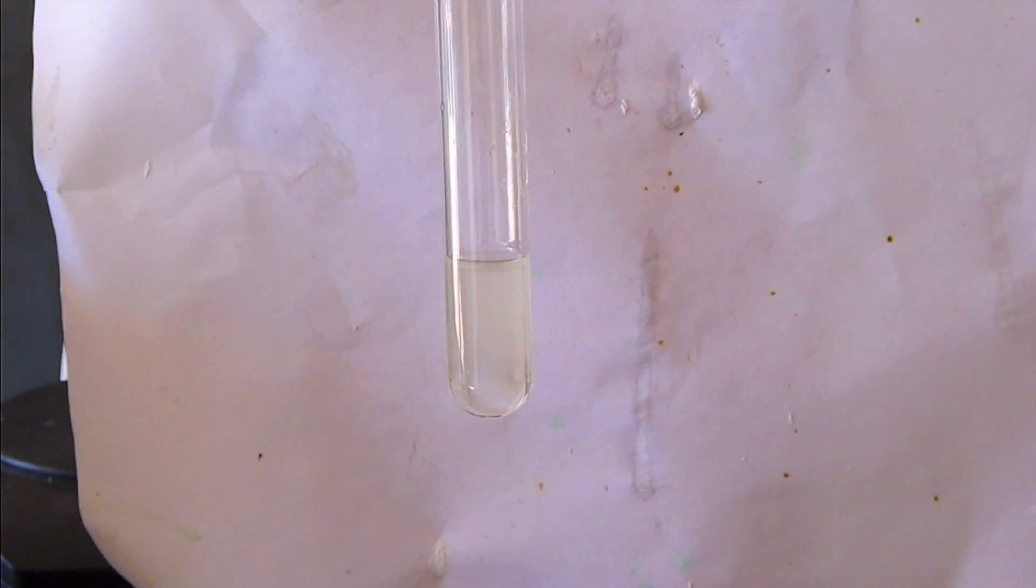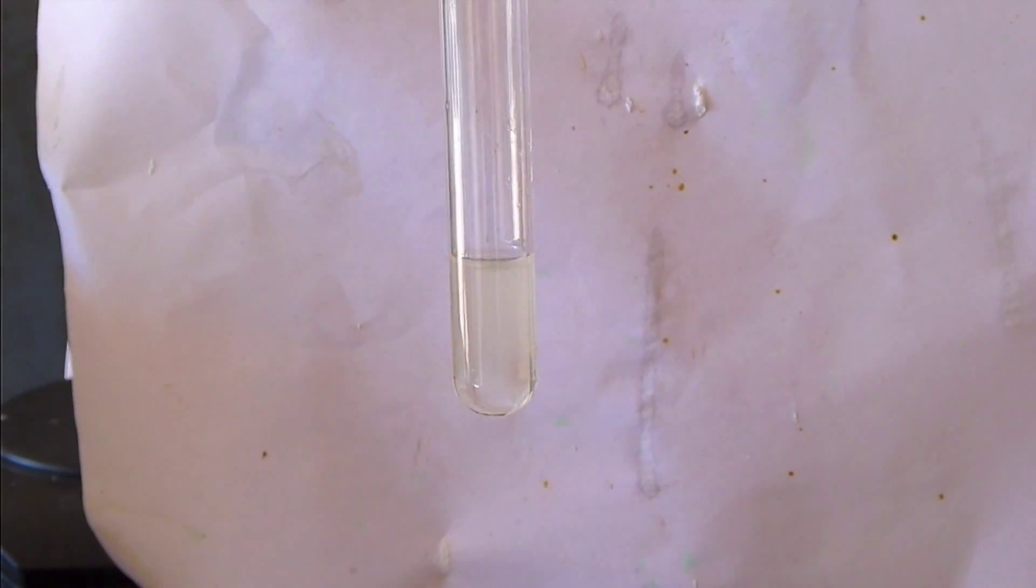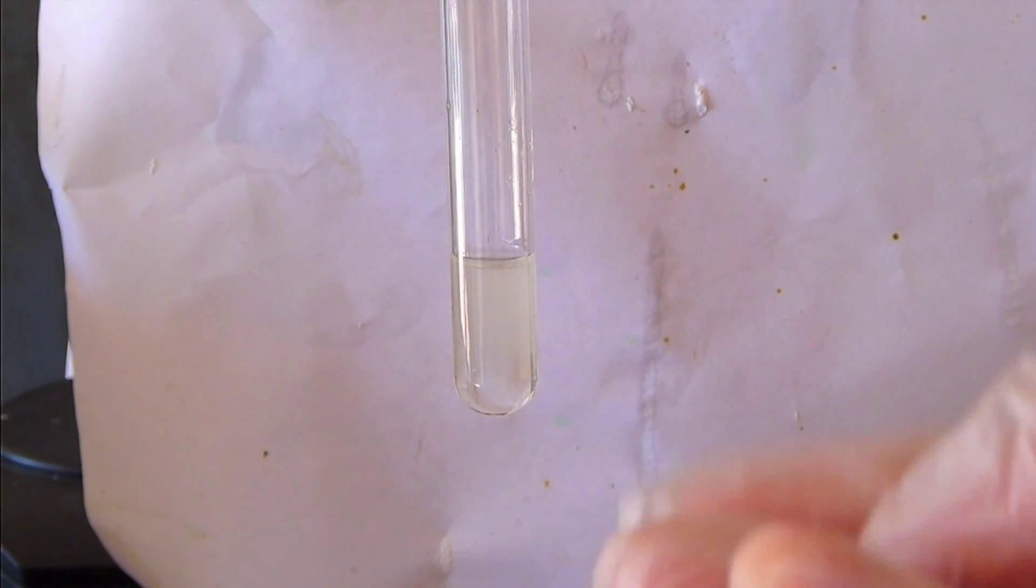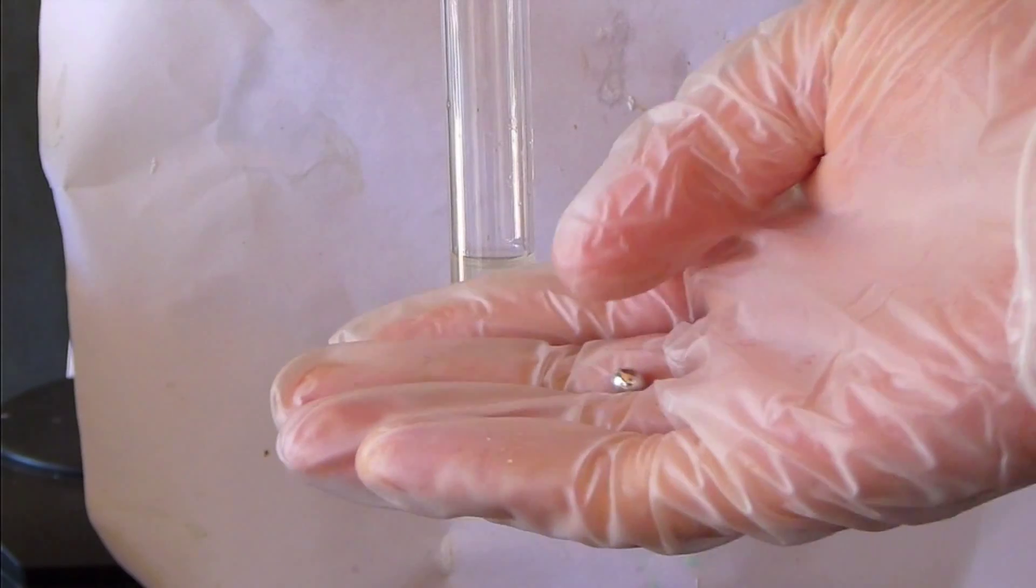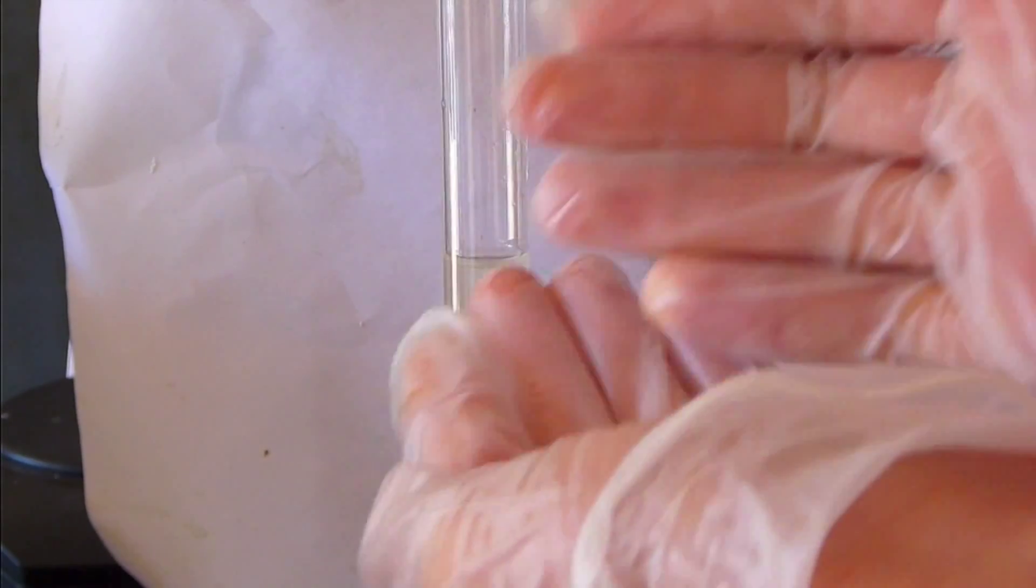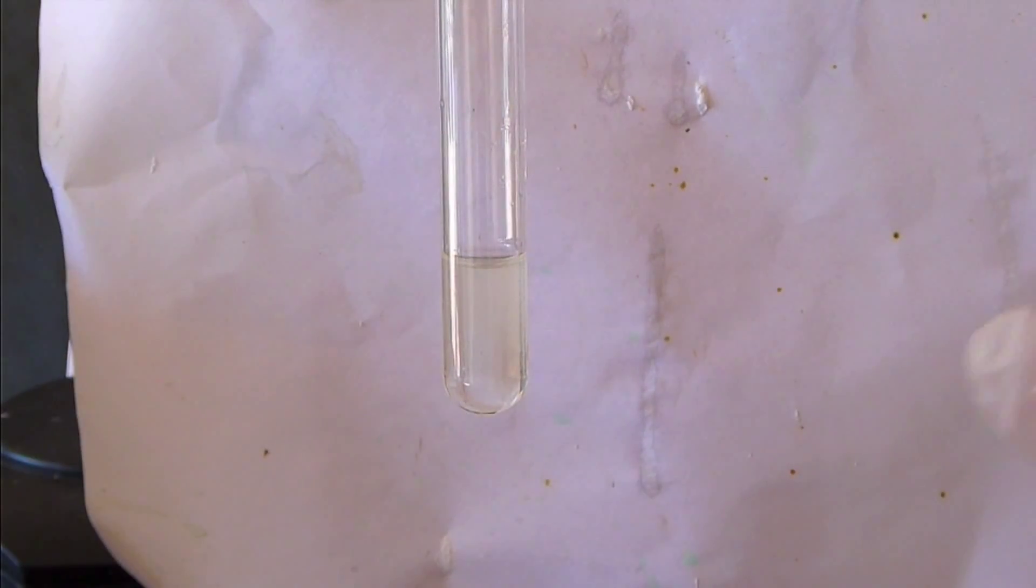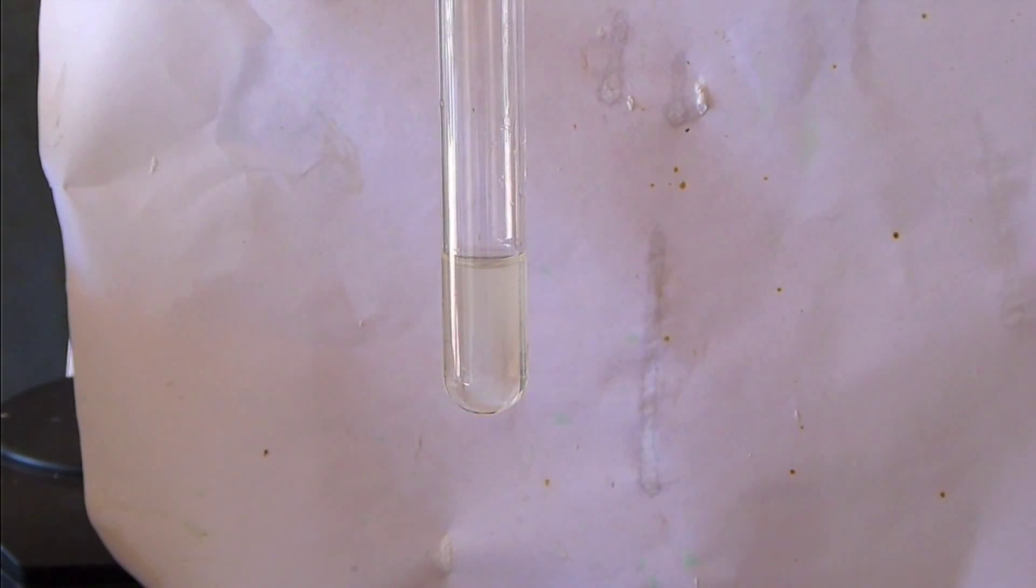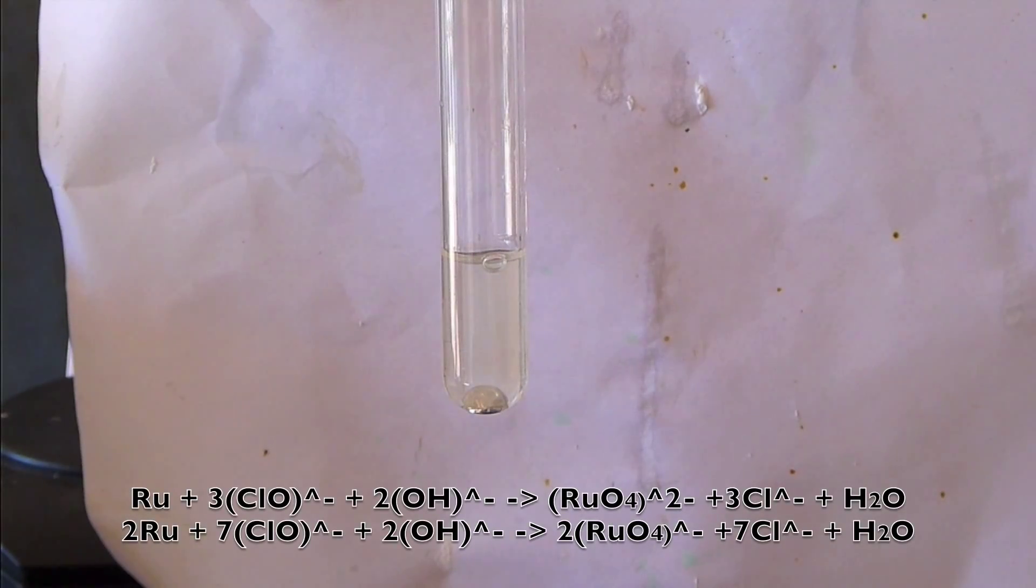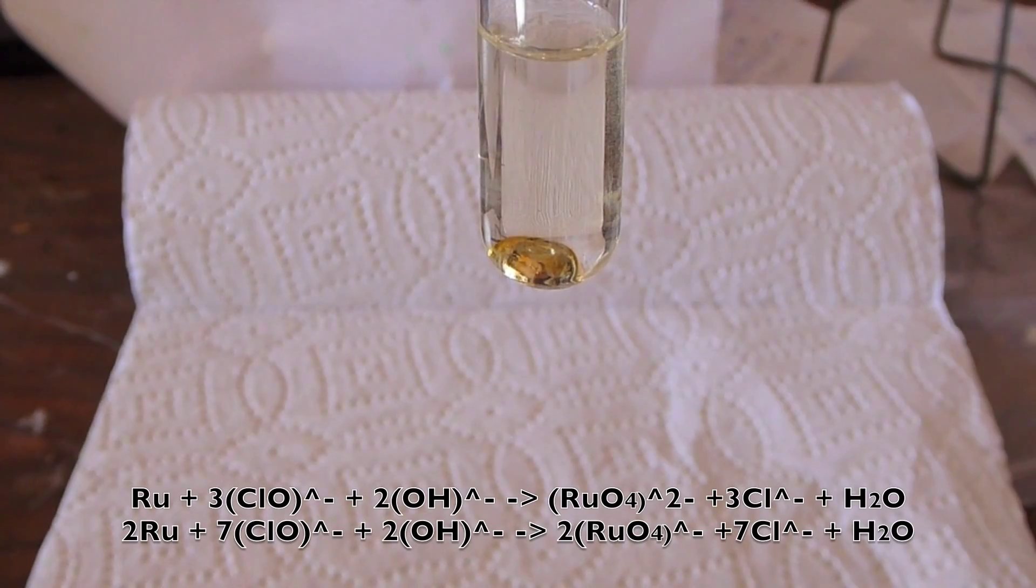My first step in doing this ruthenium experiment is getting the ruthenium into solution. This is a solution of 5% sodium hypochlorite, bleach, and sodium hydroxide, so it's alkaline. There is the ruthenium metal. You see it's a very nice bead of ruthenium. Now, I'm going to put the ruthenium into the solution, and it's going to be oxidized to the plus 6 oxidation state or the plus 7 oxidation state.